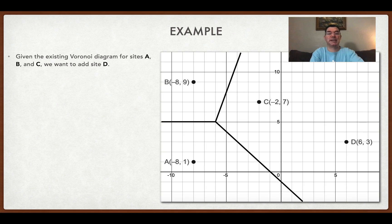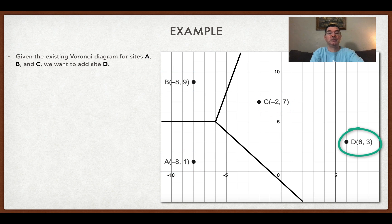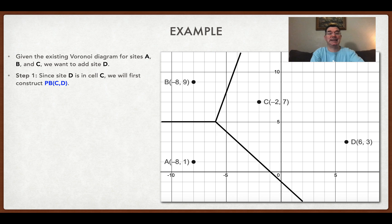So, let's look at some examples. We're going to start with a Voronoi diagram that has three sites already — A, B, and C — and it has the three edges between those sites. Now we have a new site D, and we want to create a cell so that all the points in that cell are closer to site D than they are to A, B, and C. Since site D is in the existing cell that has C in it, we will first construct a perpendicular bisector between C and D.